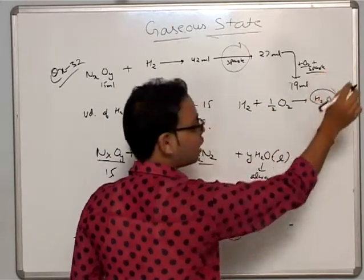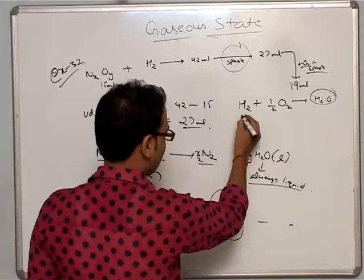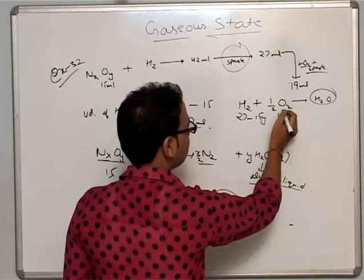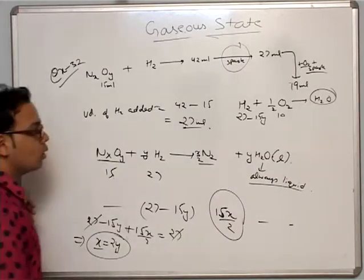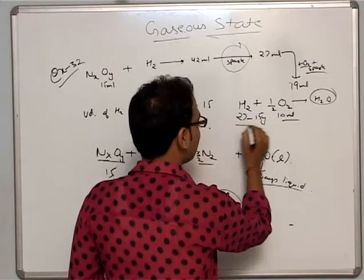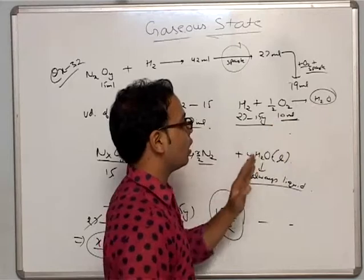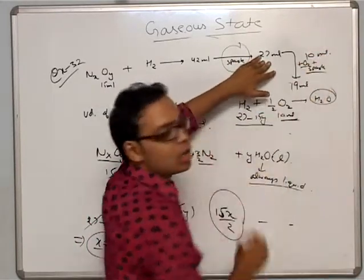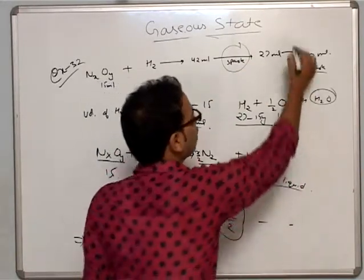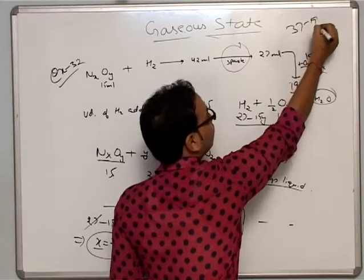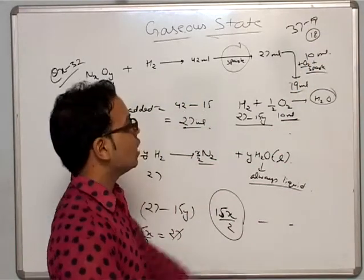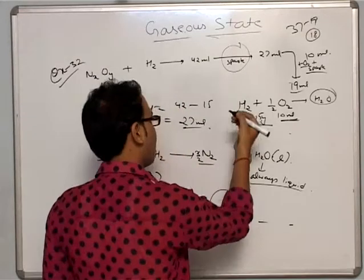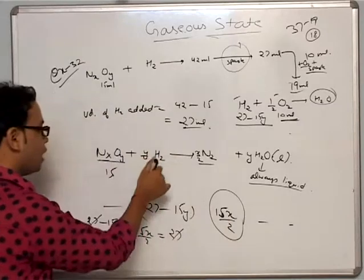Water H2O is liquid, so it has no meaning as a gas. Hydrogen remaining = 27 − 15Y. Then 10 ml of oxygen is added. So before the spark, total volume is 27 − 15Y (excess H2) plus 10 ml O2 equals 37 ml total. After the spark, we get 19 ml. So reduction in volume is 37 − 19 = 18 ml.